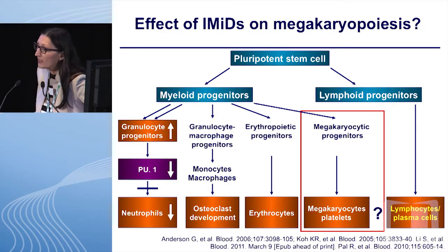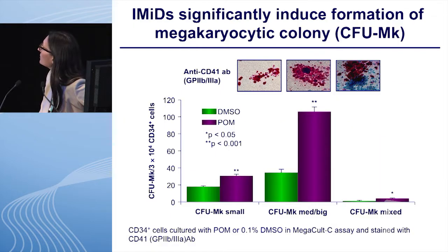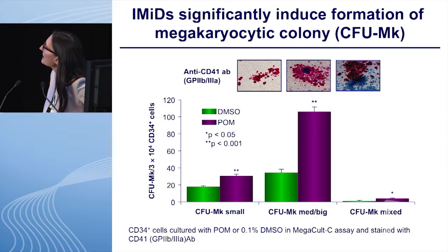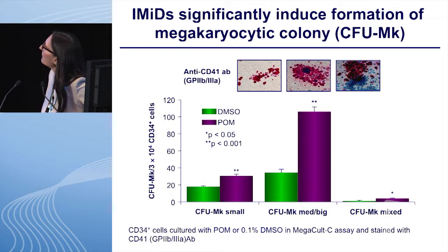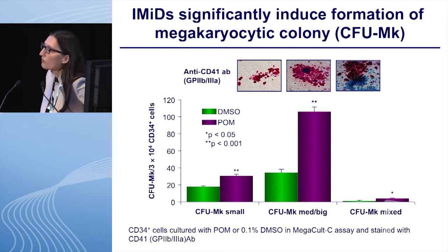We were also interested in the effect on the megakaryocyte lineage. To evaluate the effect of IMIDs on this lineage, we used megakolsi assays — special colony forming assays promoting the development of megakaryocyte colonies — and cultured those cells in the presence of pomalidomide or DMSO. There was a strong induction in megakaryocyte colonies, which was again a surprise because patients treated with lenalidomide and pomalidomide have thrombocytopenia.